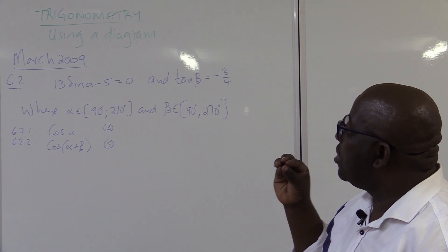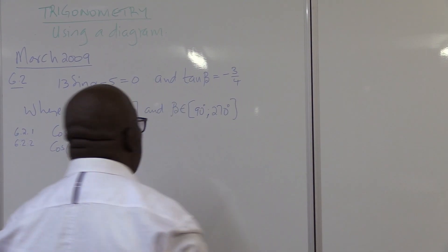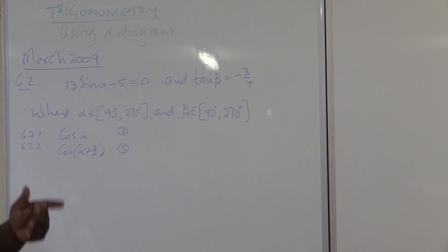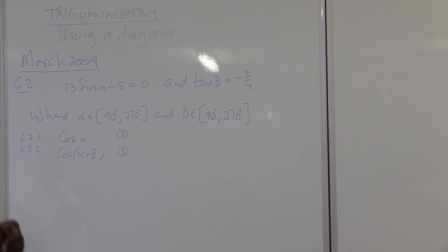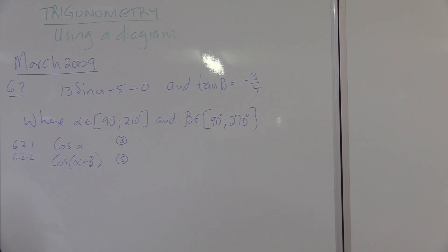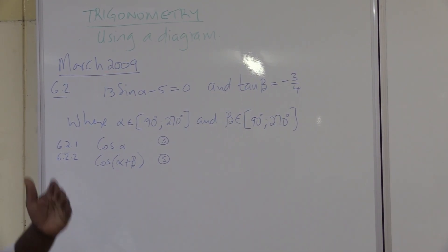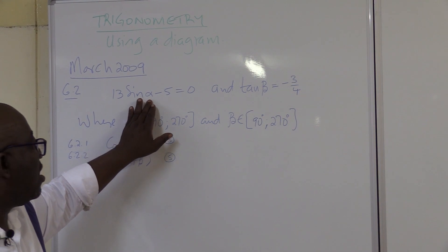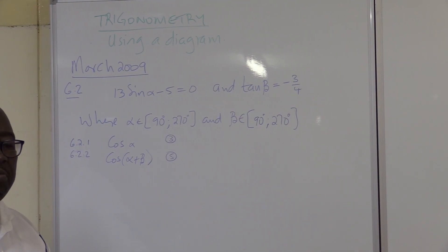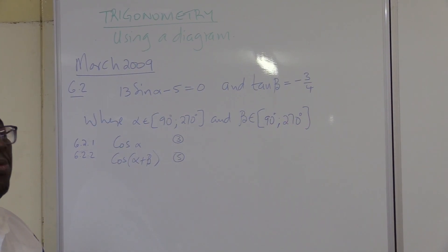13 sine alpha minus 5 is equal to 0, and tan beta is equal to minus 3 over 4, where both alpha and beta are between 90 and 270. We are given two different angles — there is an alpha and there is a beta. So I will use two diagrams: one will accommodate alpha and the other one will accommodate beta.